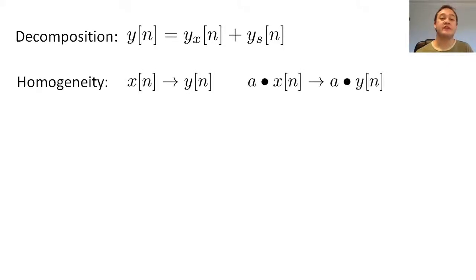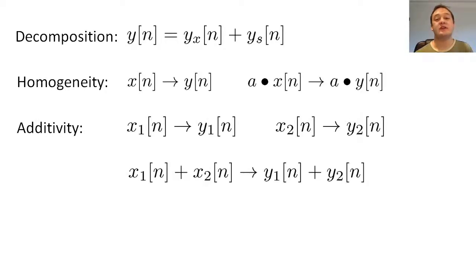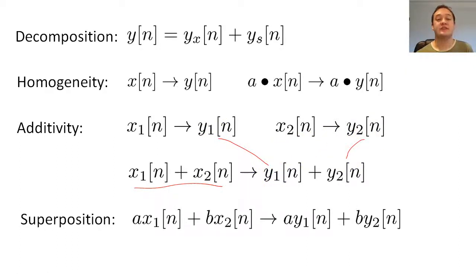The homogeneity property tells us that if we multiply x of n by a scalar, then we will scale y of n by that same scalar. The additivity property tells us that if we add two input signals together, then y of n should equal the sum of the system's response to each input separately. The superposition property tells us that the homogeneity property and additivity property can be combined.